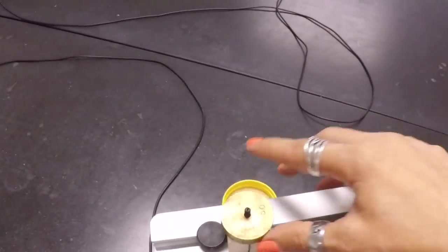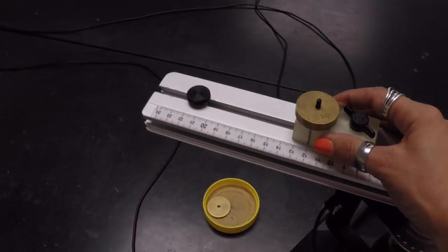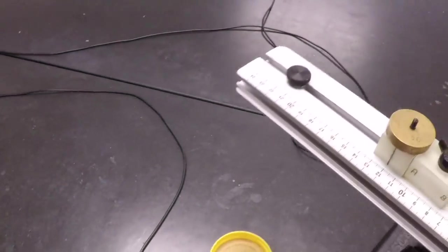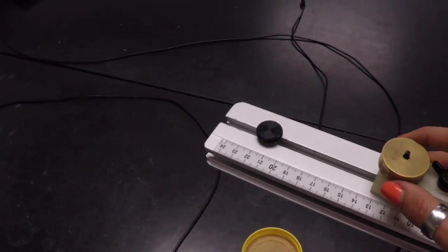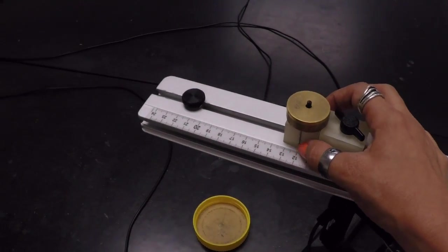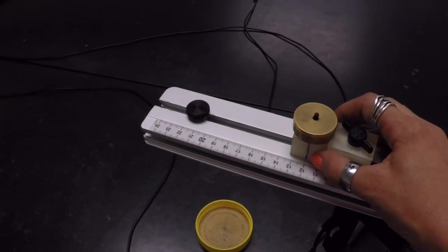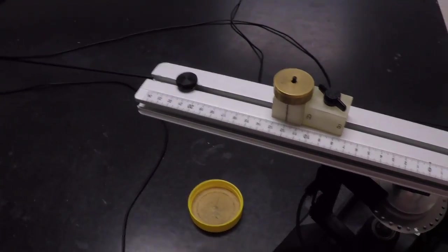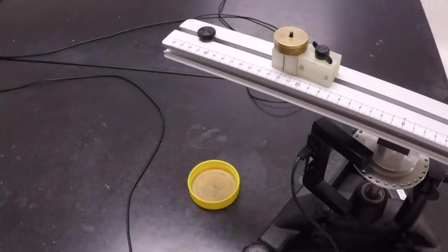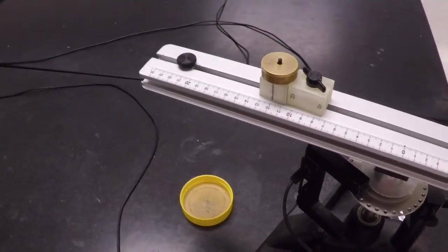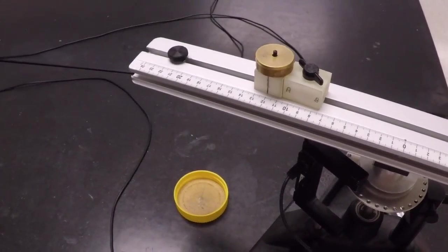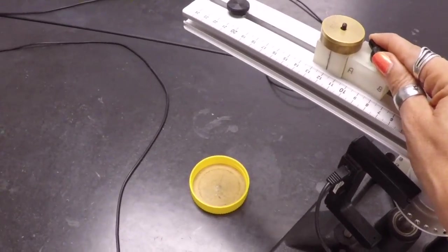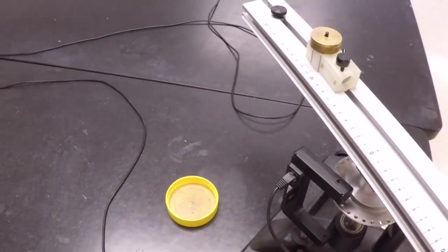So then you're going to repeat this five times for this mass and this particular radius. Then you're going to add an additional 20 grams, so your total added mass is 70 grams, and then your total accelerated mass is 70 grams plus the mass of the accelerated block. You're going to do the same thing: five times readings of the velocity as a function of time for this radius and this mass. Then you're going to change to the second radius and repeat the same procedure.